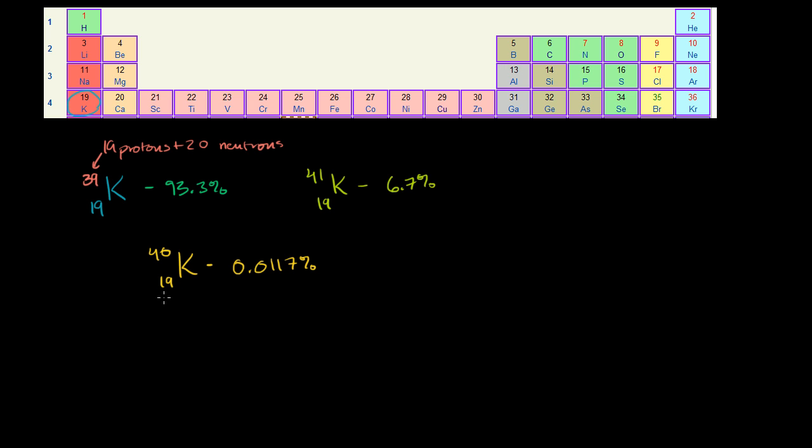Potassium-40 is the isotope of potassium that's interesting to us from the point of view of dating old, old rock — and especially old volcanic rock. When you can date old volcanic rock, it allows you to date other types of rock or fossils that might be sandwiched in between old volcanic rock.